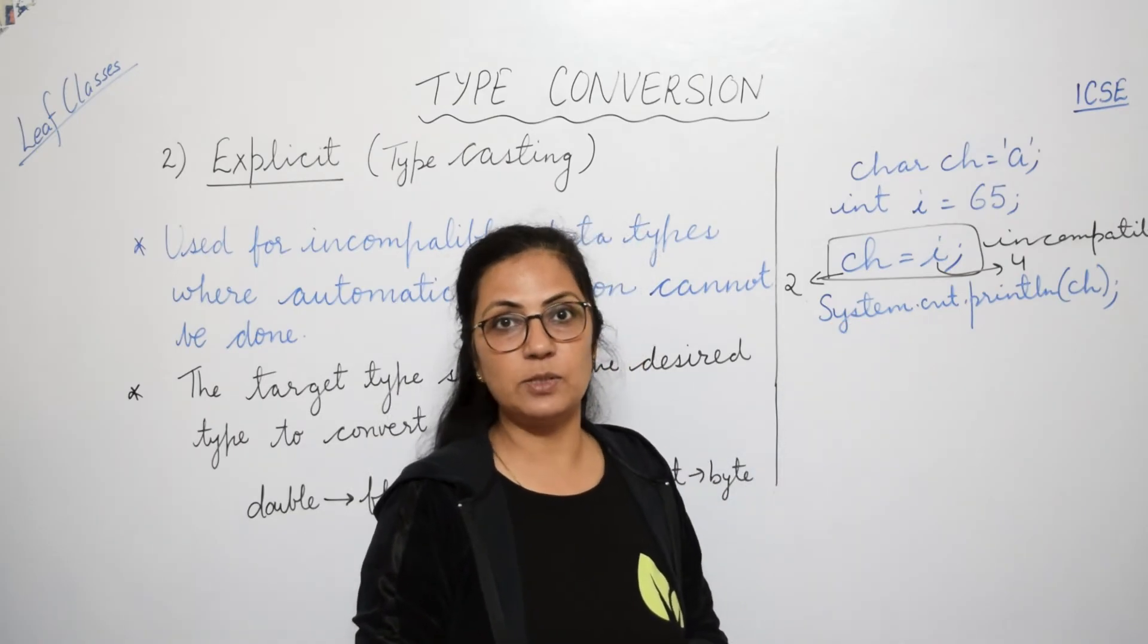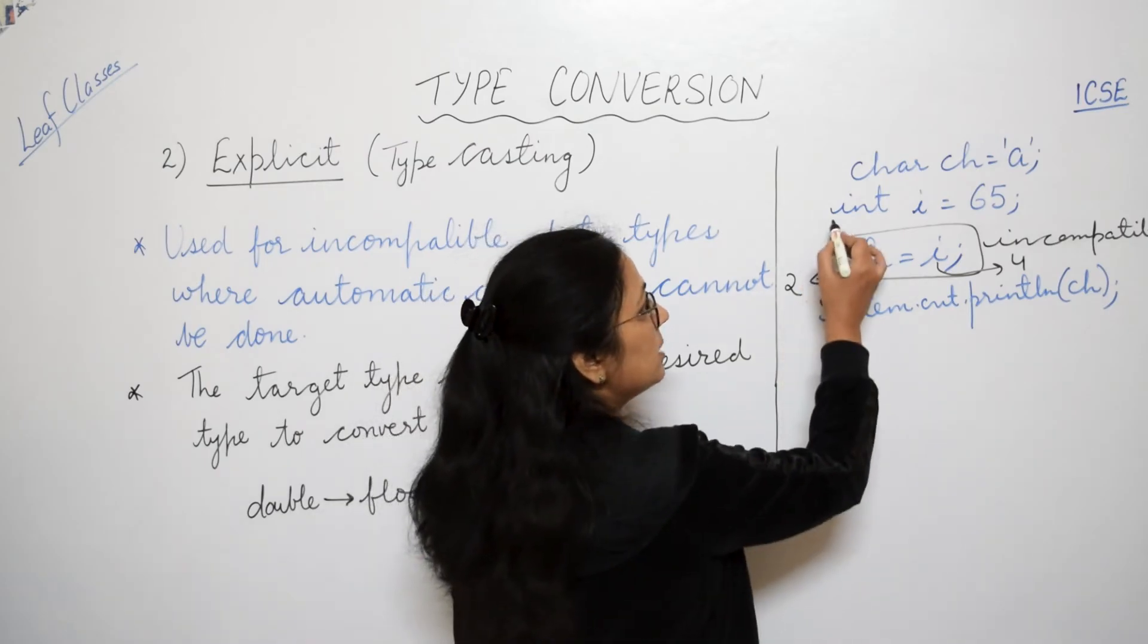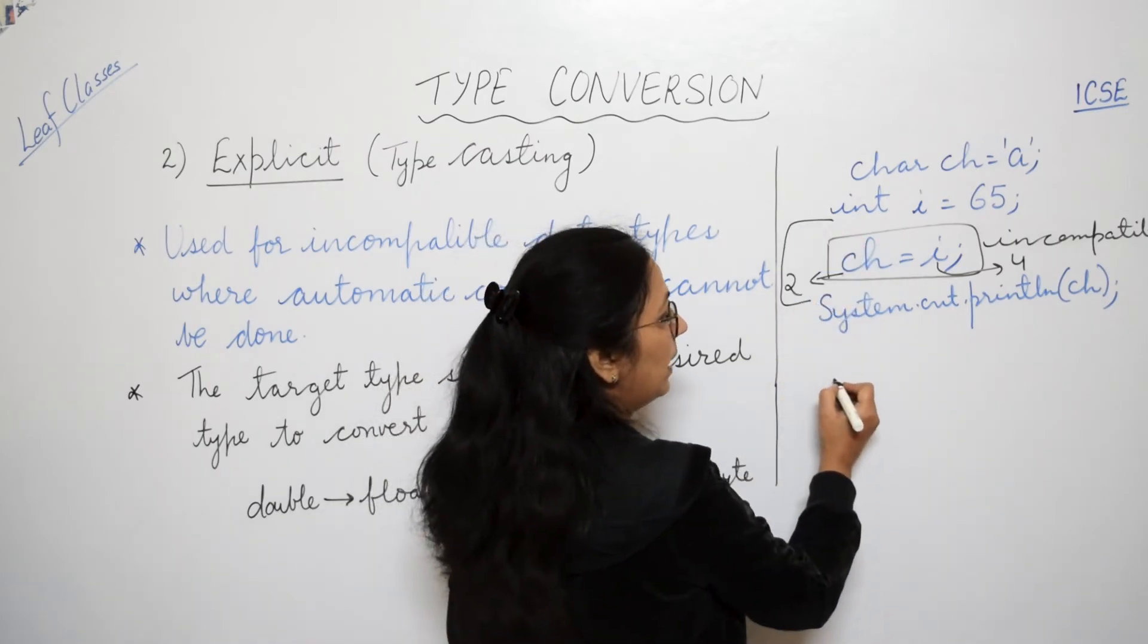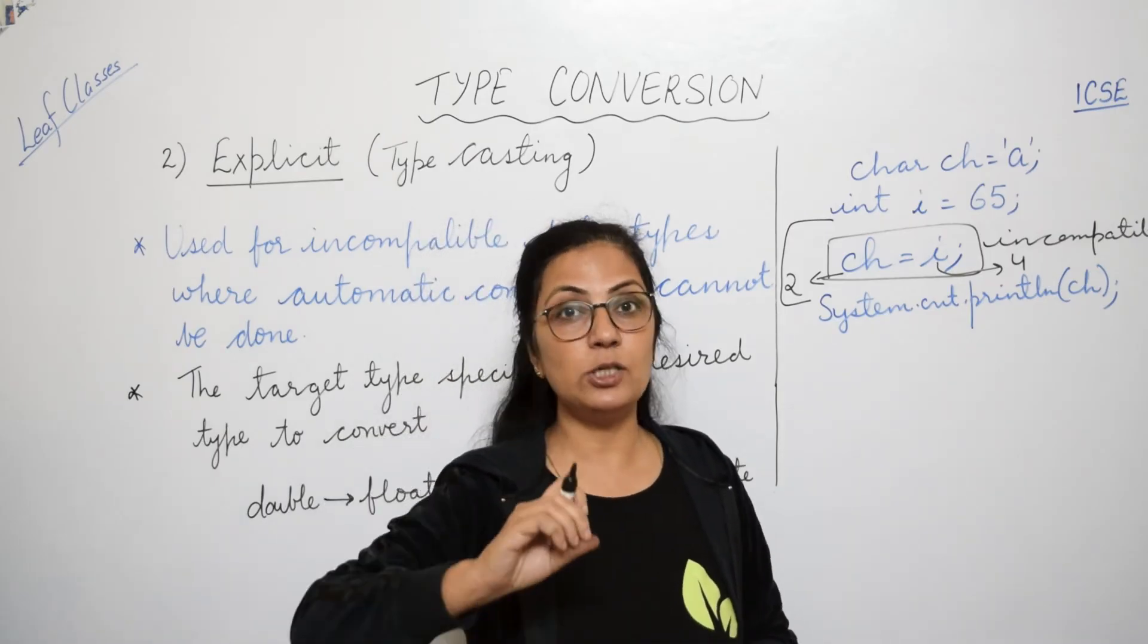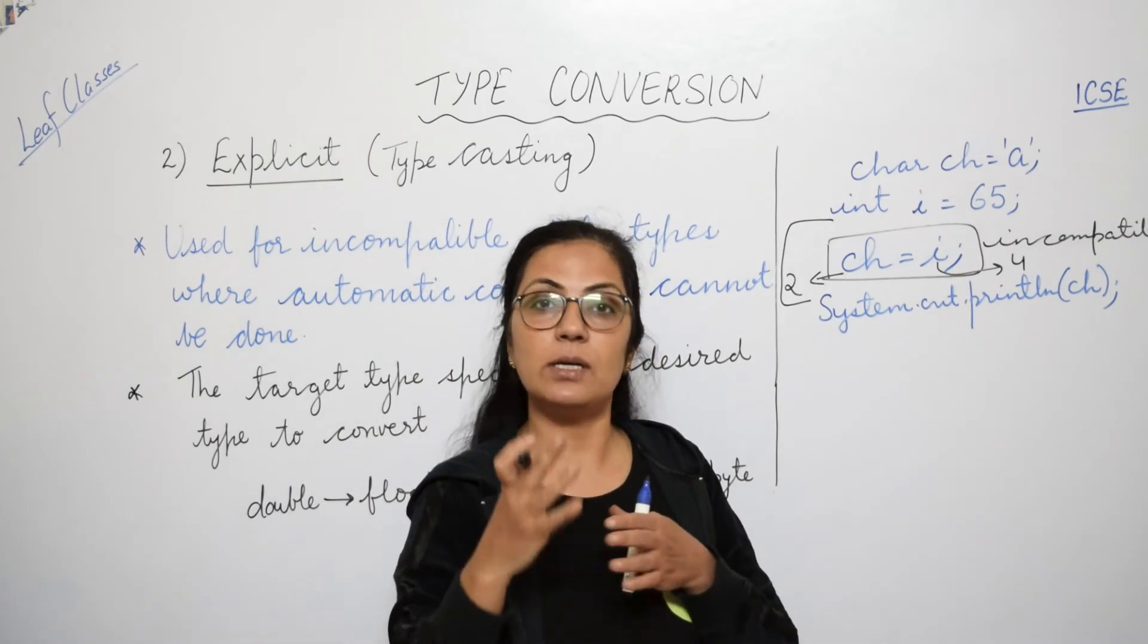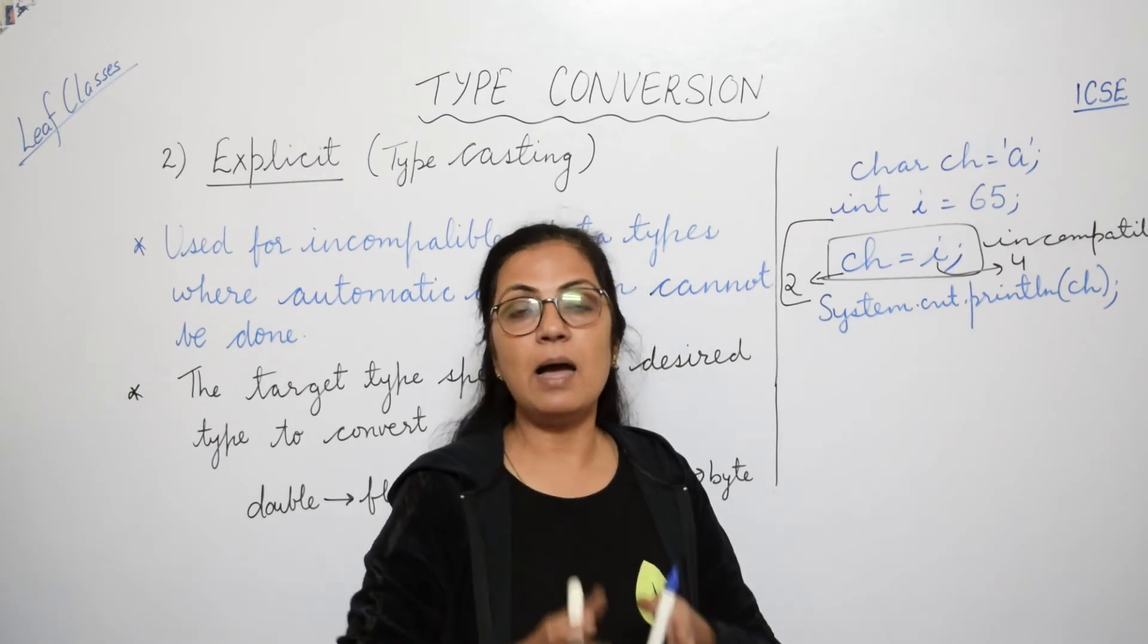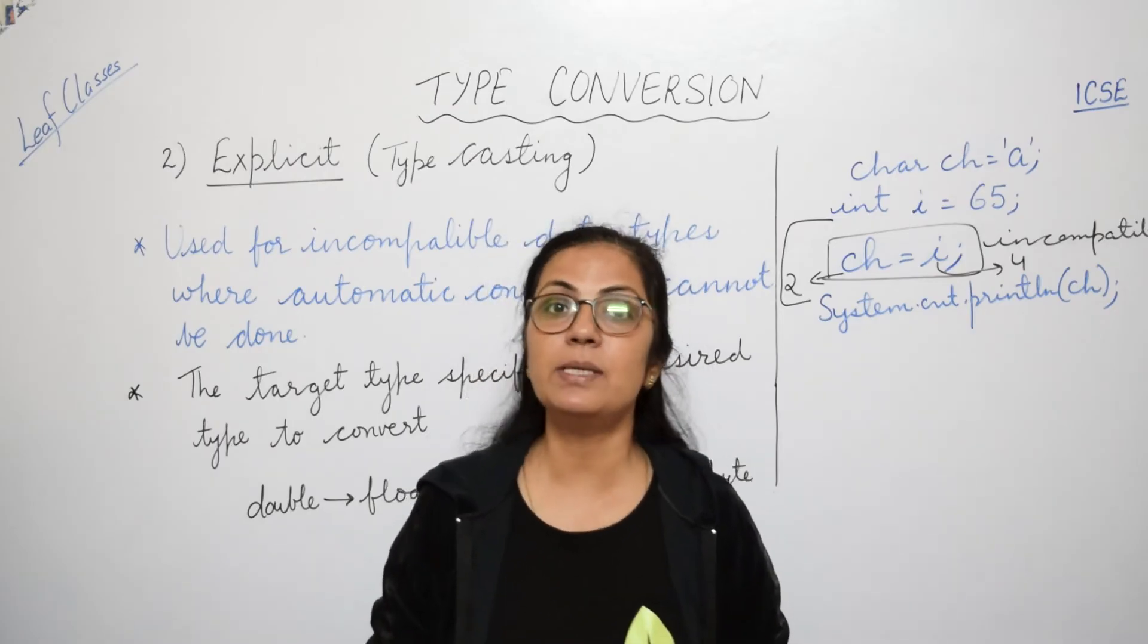So it will give you error over here. Now how to overcome this problem? For this, instead of this, what we have to write, we have to do the conversion with user's intervention. Because this automatic conversion is not taking place. Yaha par aapka humara aata hai explicit conversion.